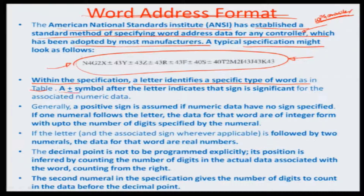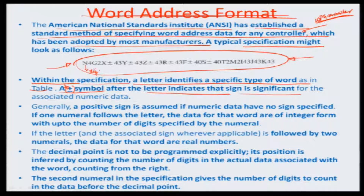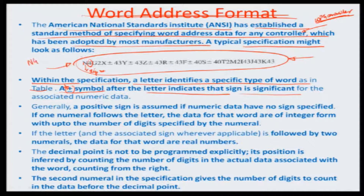The plus/minus symbol after the letter indicates that the sign is significant — for example if it mentions some kind of direction. Looking at the letter N, the number N4 indicates a sequence or block number. N4 means the capability ranges from N0000 to N9999, so you can write up to 10,000 lines of program — meaning the maximum number of lines you can enter in the controller at a single go is about 10,000.